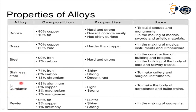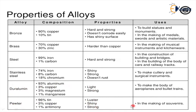Duralumin is important in industries. Its main composition is 93% aluminium, 3% copper, 3% magnesium, and 1% manganese. It is very light compared to aluminium, so in most cases duralumin is used instead of aluminium. It is used in aeroplanes and bullet trains. All these are the various properties of alloys.